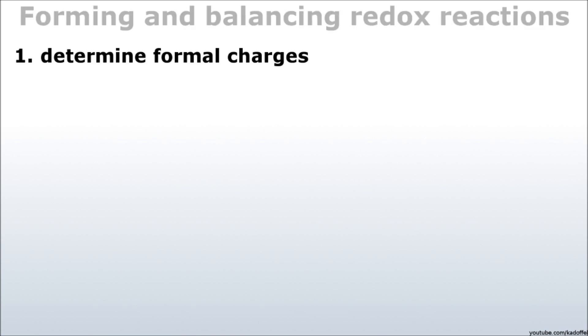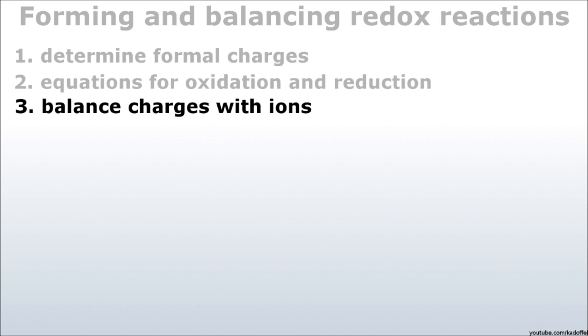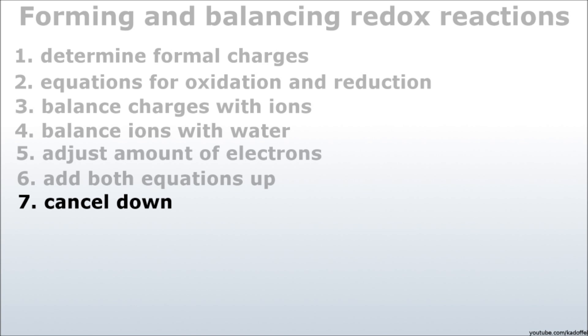In the first step, we will determine the oxidation number of our reactants. And then, in the second step, we will form separate equations for oxidation and reduction. In the third step, we will balance the charges in our equations with ions. In the fourth step, we will balance the amount of substance with water. In the fifth step, we will adjust the equations according to their quantity of electrons. In the sixth step, we will add up both equations. And in the seventh and final step, we will check whether we can cancel down anything or not. These are the seven steps we are going to use for this example. You might find it helpful to use a similar system to solve redox reaction equations. It will significantly reduce the amount of your careless mistakes.